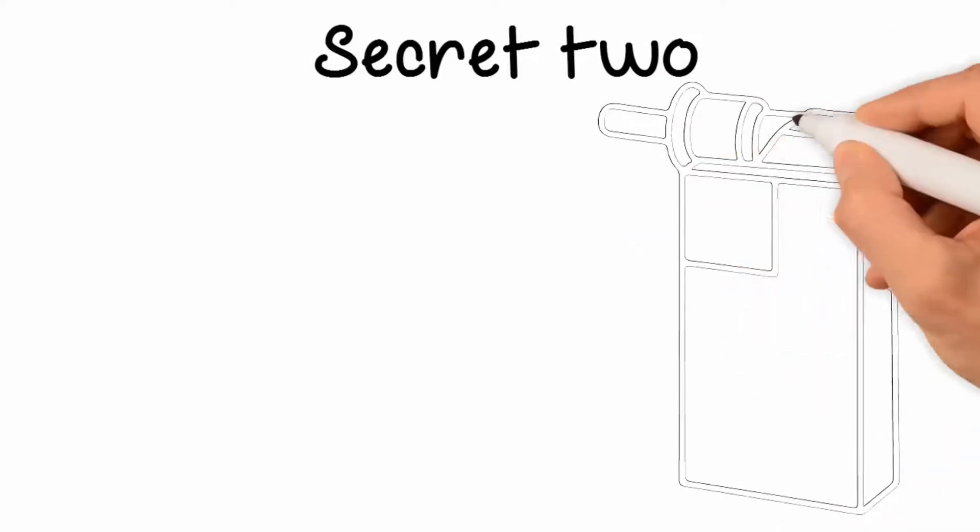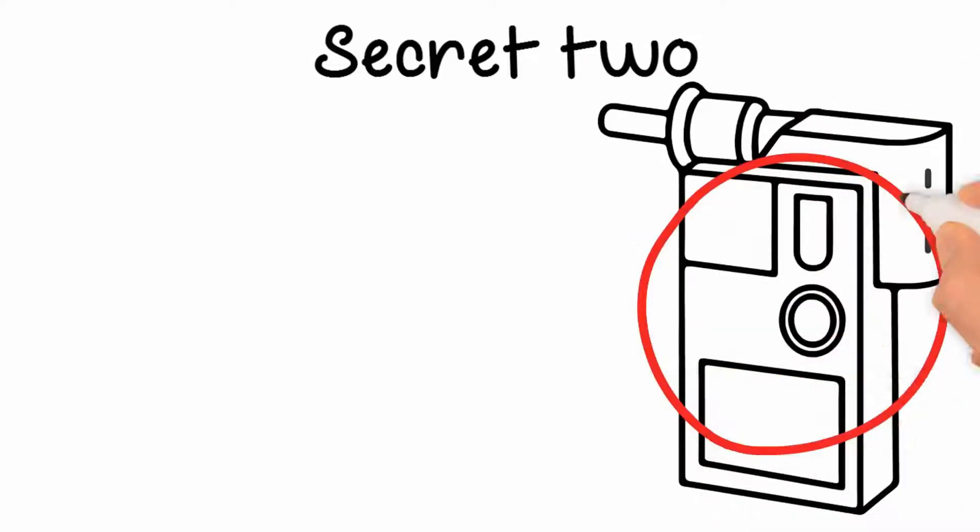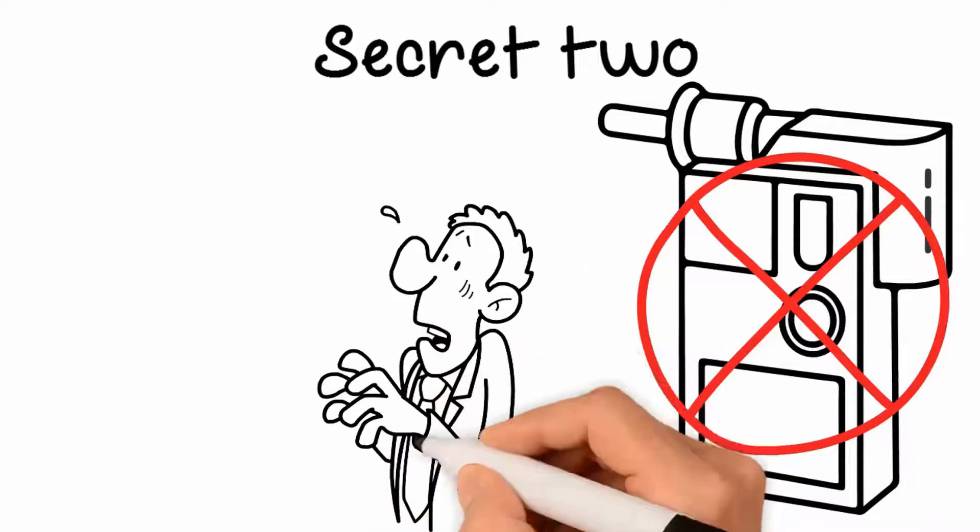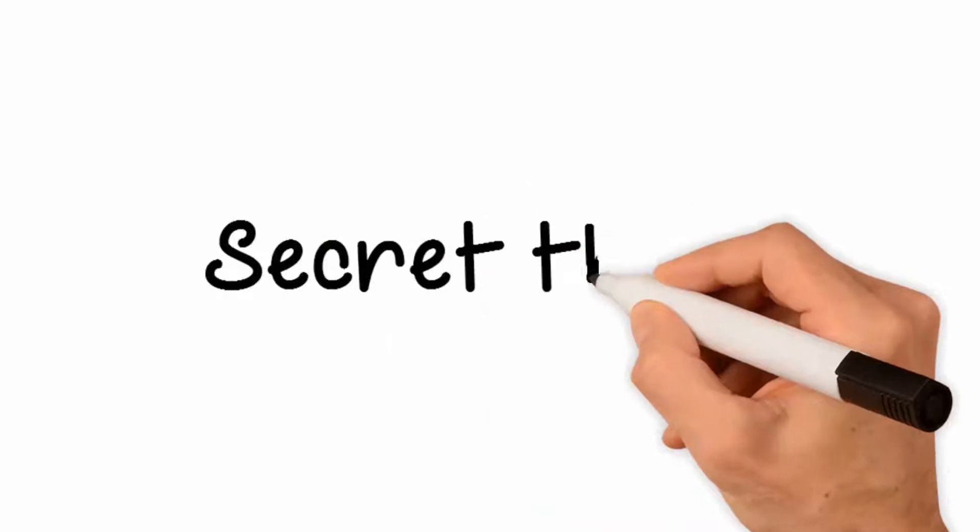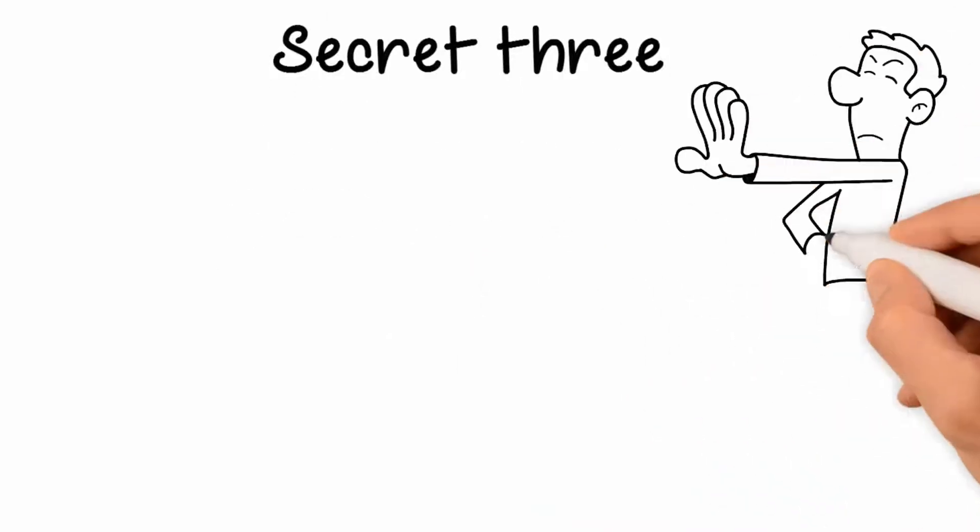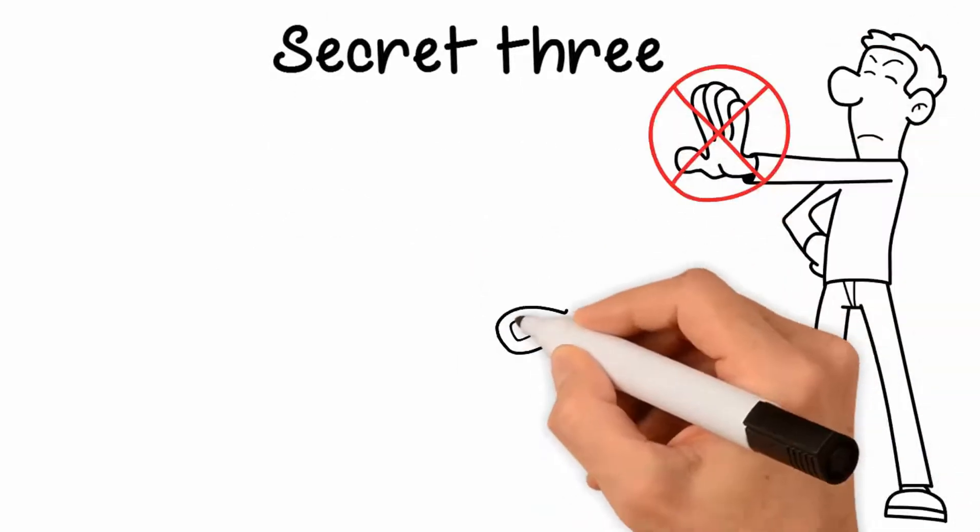take the portable breath test. The PBT is not admissible in court; however, it can be used against you by the prosecutor during the plea bargaining stage. Secret three: Never refuse the test at the station. Most states have an implied